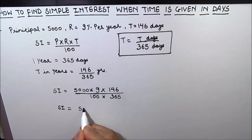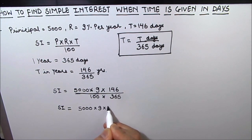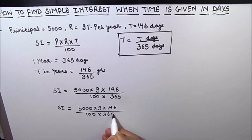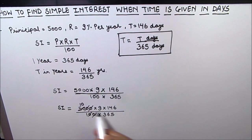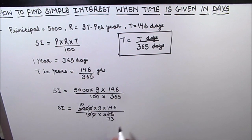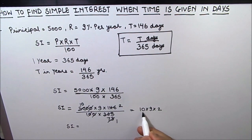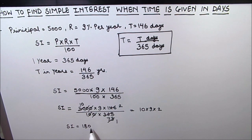Now let us simplify: 9 × 146 in the numerator, divided by 100 × 365. The two zeros cancel out, and 365 simplifies with 146 — since 73 × 2 = 146 and 73 × 5 = 365. This gives us 10 × 9 × 2, so Simple Interest = 90 × 2 = 180 rupees.